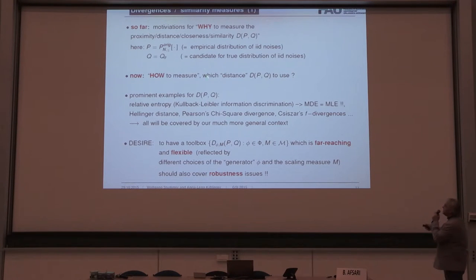So, now recall, we have two measures, two probability distributions. The one is, for instance, the empirical distribution of the IID noises, of the transformed series. And the other one is a candidate for the true distribution of the IID noise. P and Q. So, now we want to measure the distance between them. We all know some special cases, of course. Relative entropy, or Kullback-Leibler, the same name. Recall, the maximum distance estimation is maximum likelihood. Maximum likelihood is always covered. Another distance, of course, all of you know is the Pearson chi-squared, typically used for goodness of fit. Then, the Hellinger distance is also well-known. They can be covered by a more general class of Csiszár-f divergences, but we will be much more general than that.